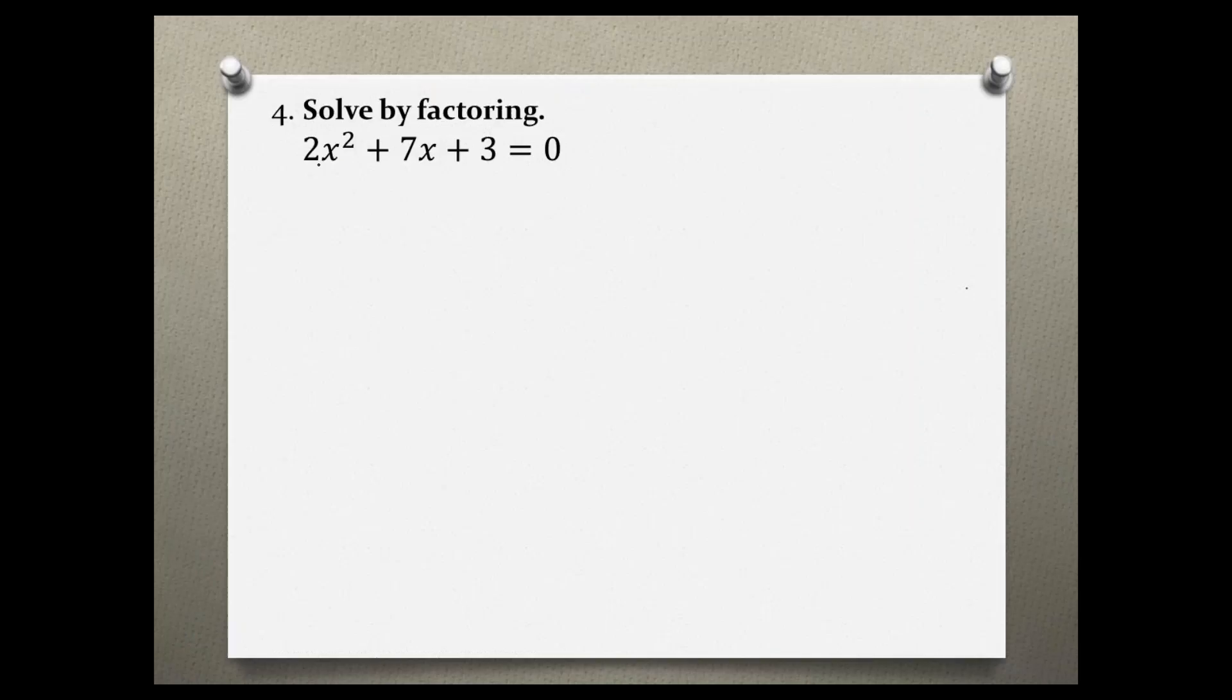So this is still a trinomial but this time we have a coefficient of 2. I'm going to use the Columbia method but I am going to add two more steps, one in the beginning and one at the end. Remember there are more than one factoring method out there, you just need to get good with one of them.